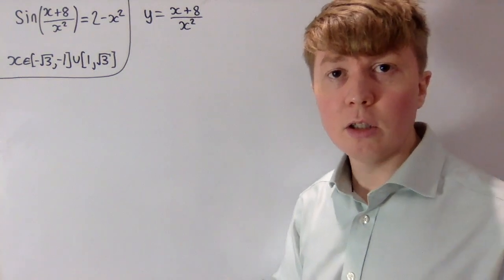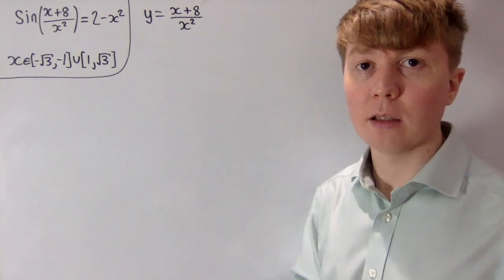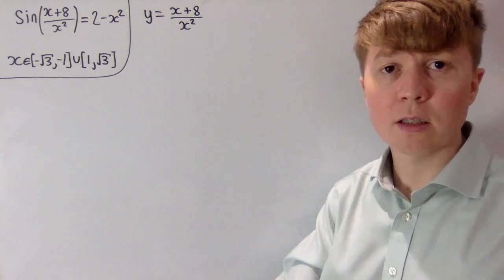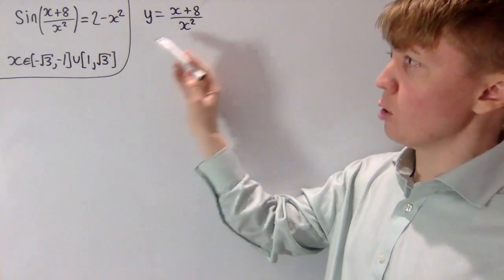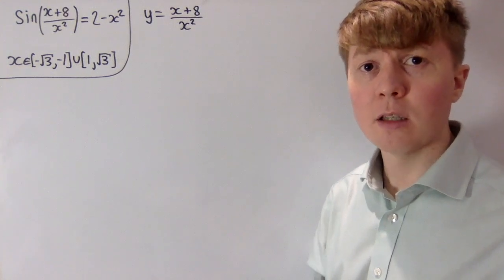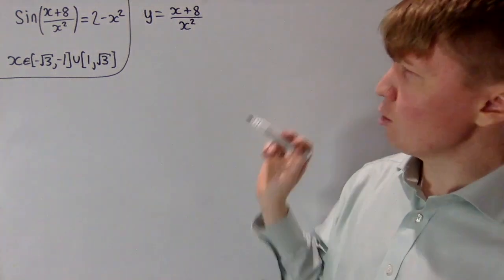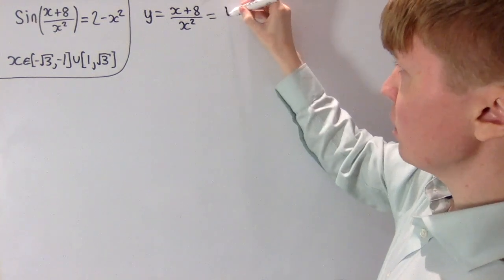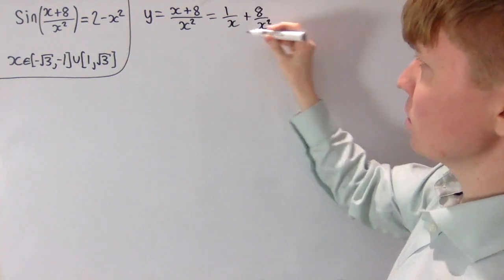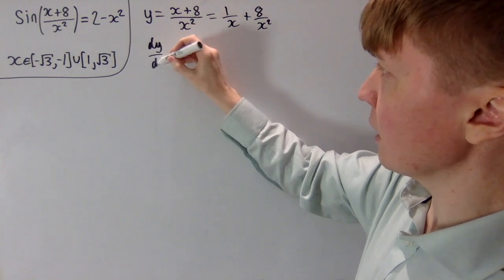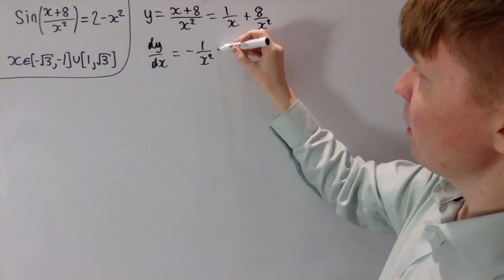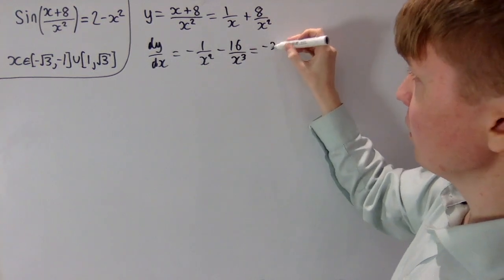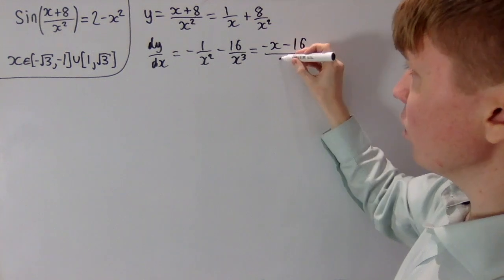For these values of x, we'll look at how (x+8)/x² behaves and what values it takes. There's an asymptote at x equals zero, but that's not in our range. Writing this as 1/x plus 8/x², dy/dx is minus 1/x² minus 16/x³, which simplifies to a single fraction: minus (x+16) all over x cubed.